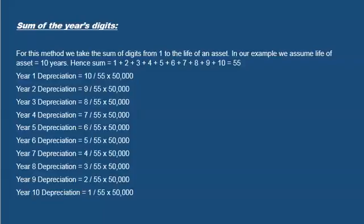The sum-of-the-years-digits method takes the sum of digits from 1 to the life of the asset. In our example with a life of 10 years, the sum of the years is 1+2+3+4+5+6+7+8+9+10, which equals 55. For the first year, depreciation is (10/55) × $50,000. For year 2, depreciation is (9/55) × $50,000. For year 3, it is (8/55) × $50,000, and so on for all remaining years through year 10.